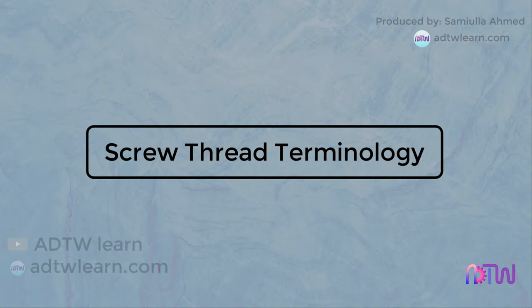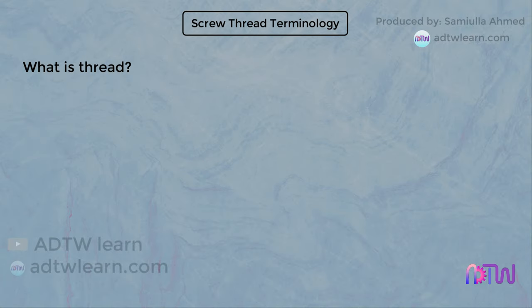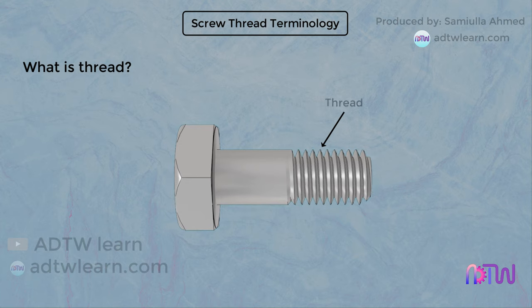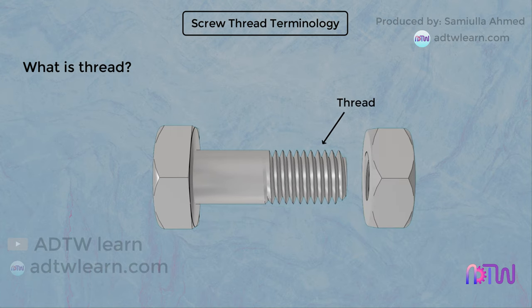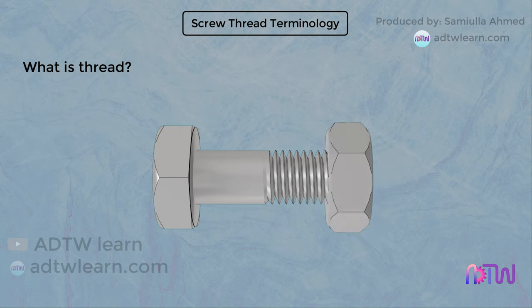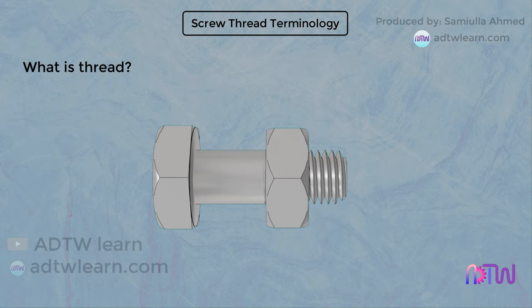Screw Thread Terminology. What is a thread? A screw thread, often shortened to the thread, is a helical structure used to convert between rotational and linear movement or force. A screw thread is a ridge wrapped around a cylinder or cone in the form of a helix.